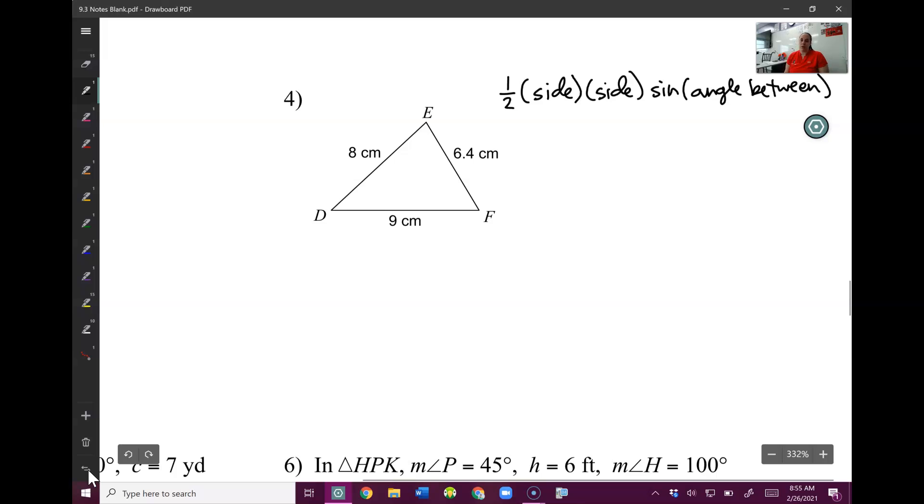Now if you look at number 4, you should notice a problem right away. I don't have any angles between these sides, which means I'm going to need to do law of sines or law of cosines to find one of my angles. If I look at this, I have three sides.